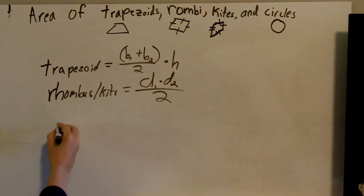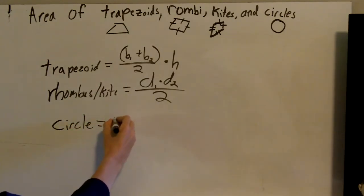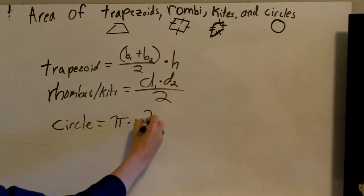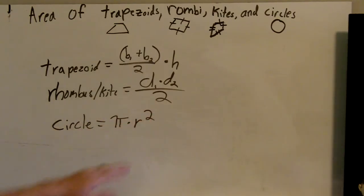And then our final one is circles. Circles formula is pi times radius squared. So remember, radius is half of the distance of the circle.